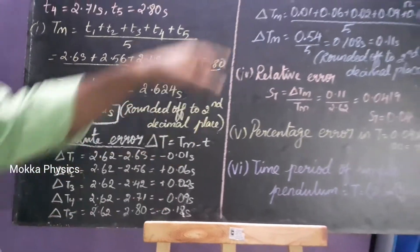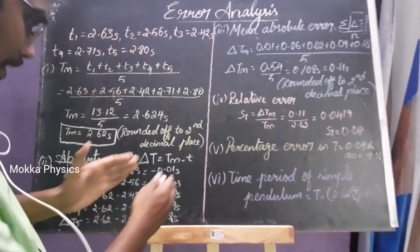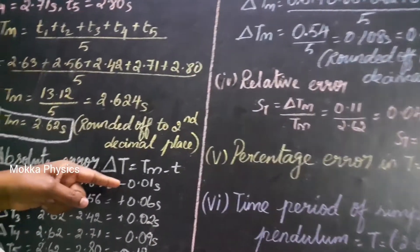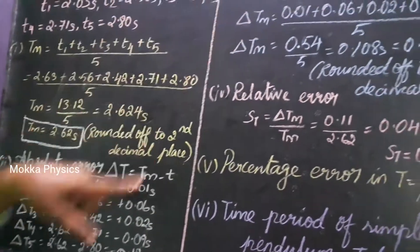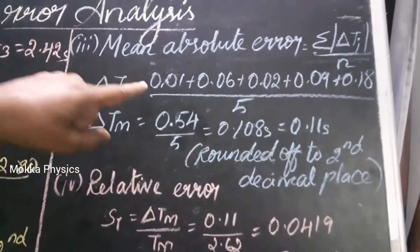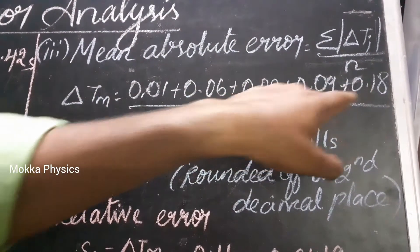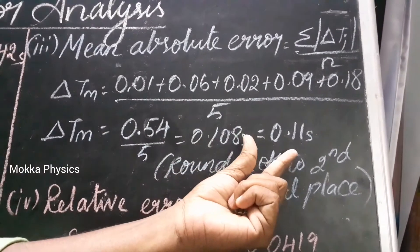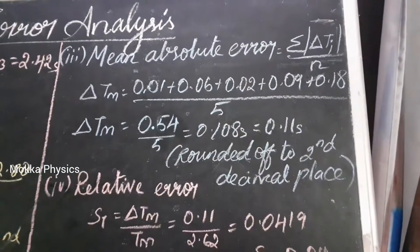For the mean absolute error, if you have a negative value — for example, minus 0.01 — you consider it as positive, so it becomes plus 0.01. Then you add all the absolute error values and divide. The mean absolute error is 0.11.